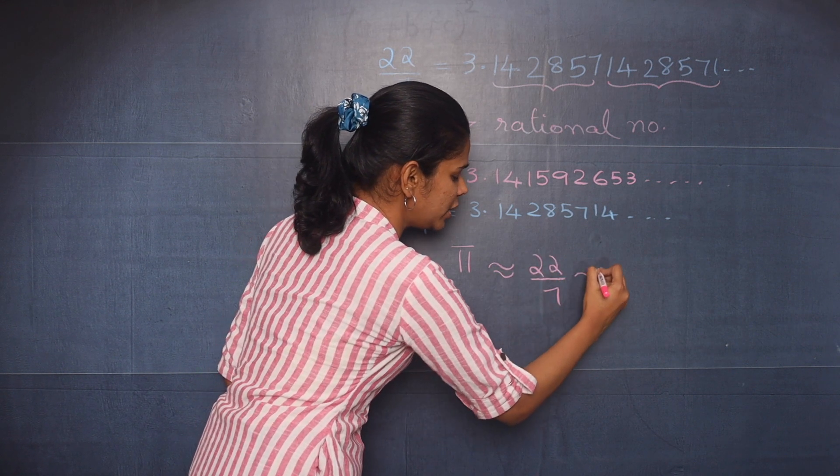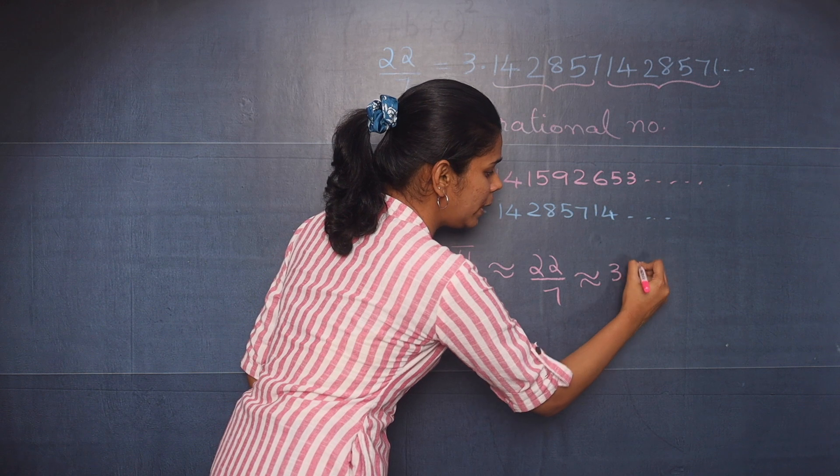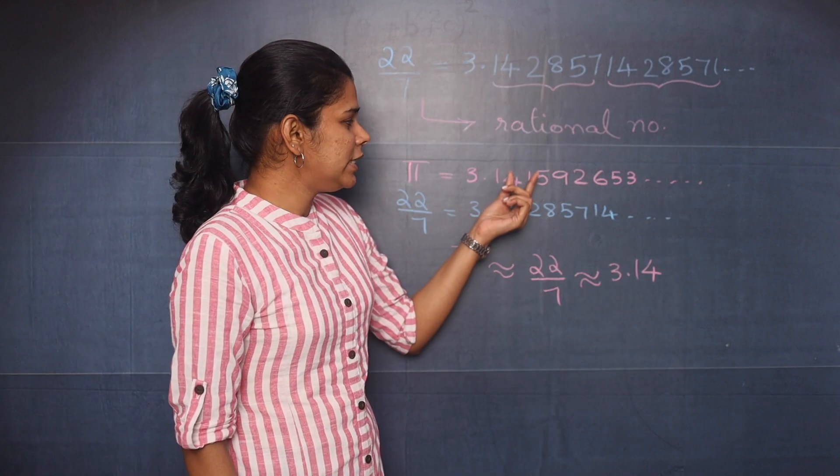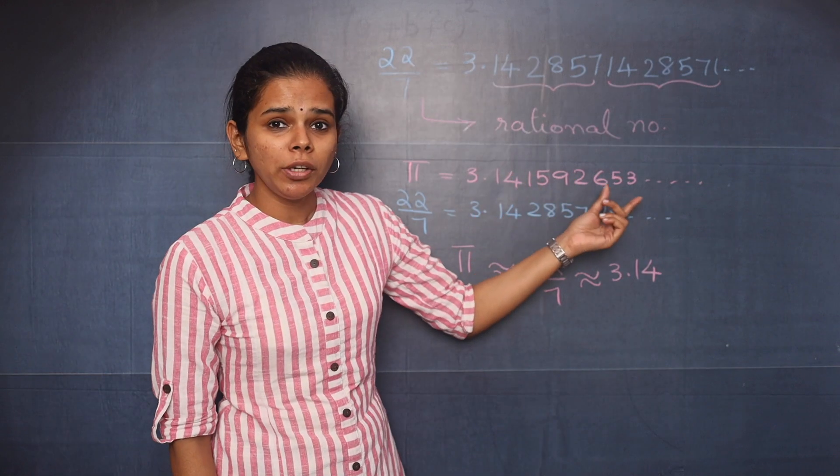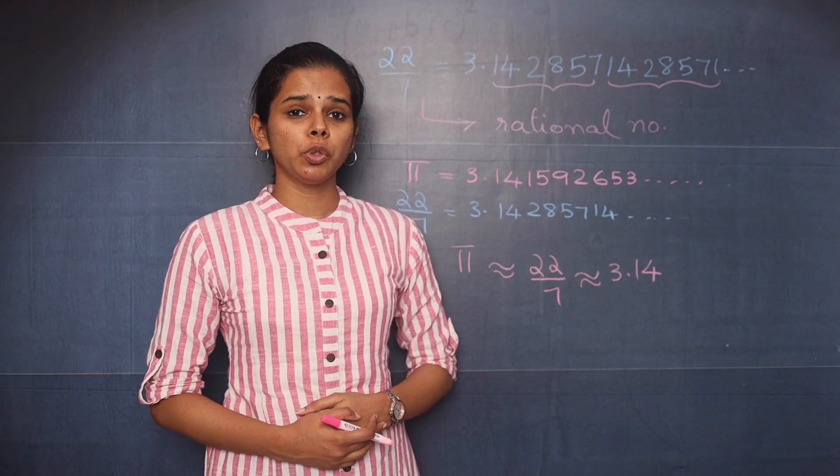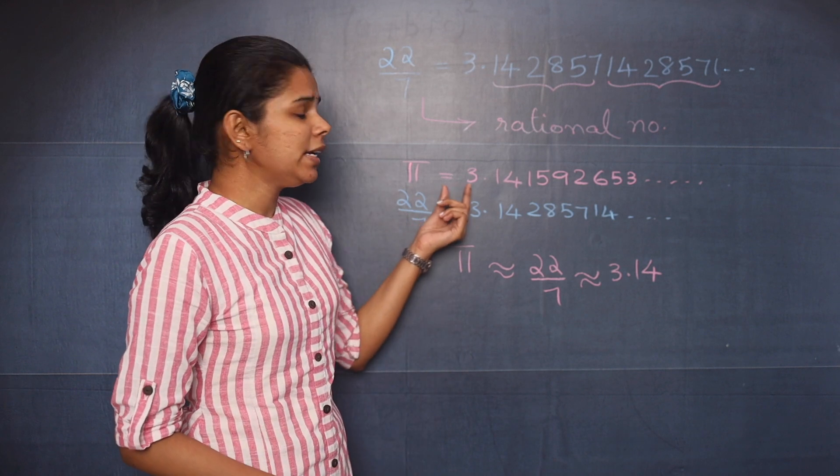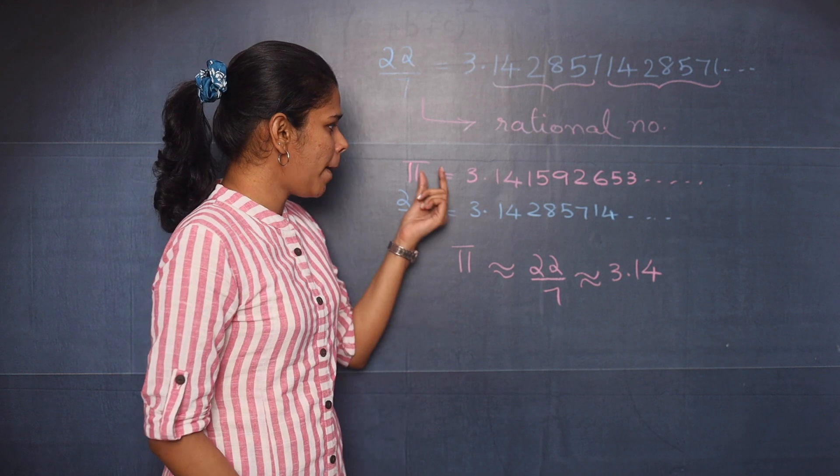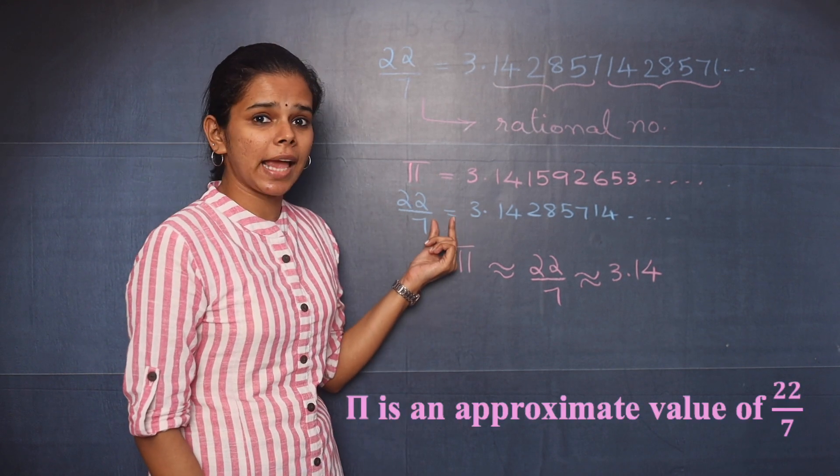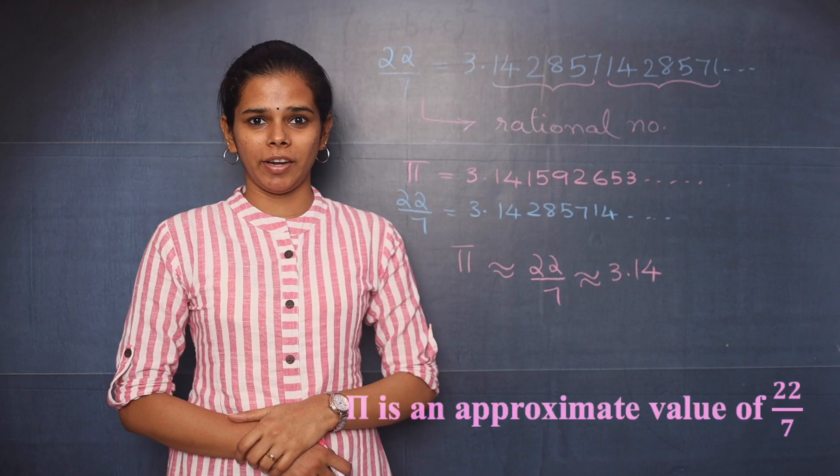You can see pi is a non-terminating decimal expansion. So you can conclude that pi is an irrational number because pi is not an exact value of 22 by 7.